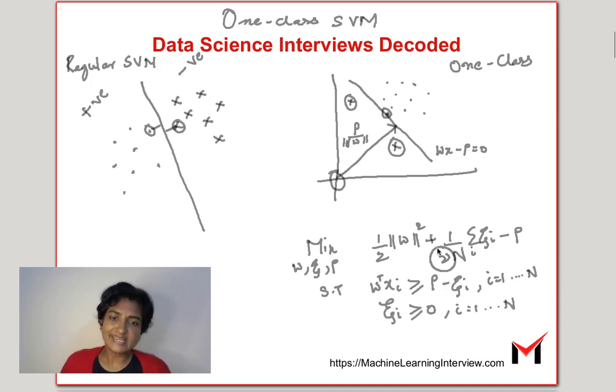So nu is indicative of the slackness we want to allow in some sense, which means how many outliers we want to allow.